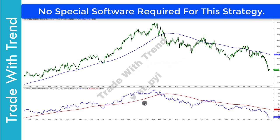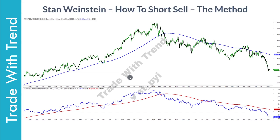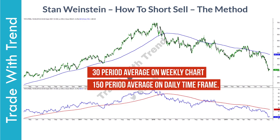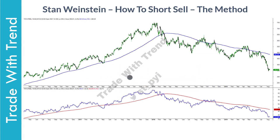In the bottom panel, I have the relative strength RS indicator. Stan Weinstein prefers using a 30-period weekly moving average. Since I prefer using this on a daily timeframe chart, I have adjusted the moving average parameter in the same ratio. Candlestick chart and moving average are available across all technical analysis platforms. For the relative strength RS indicator, I have mentioned the code in the comment section below.